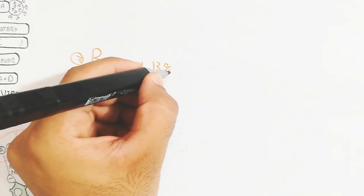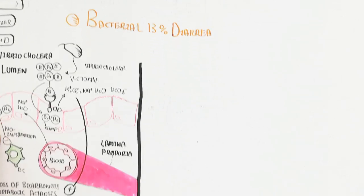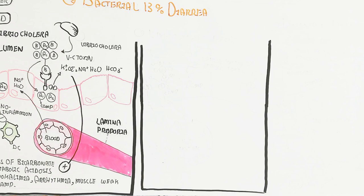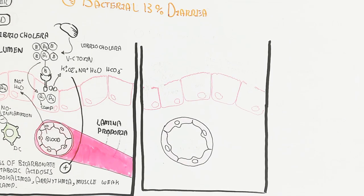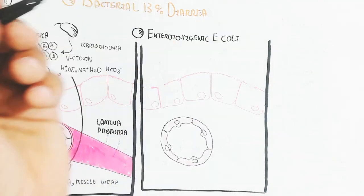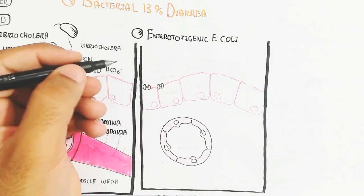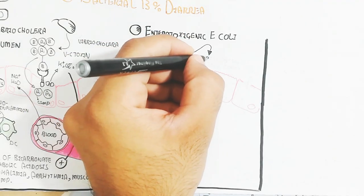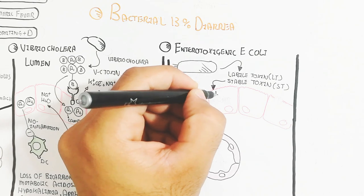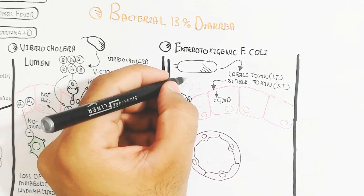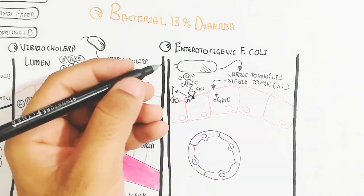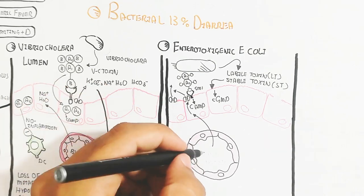Enterotoxigenic E. coli is also involved in 13% bacterial diarrhea. It produces labile toxin and stable toxin in the lumen. The labile toxin has the same structure with A subunit 1 and 2. The GM1 receptor receives through B subunit, triggering cyclic AMP when endocytosed. The stable toxin triggers cyclic GMP, but both cause efflux of water, sodium, etc., like Vibrio cholera.